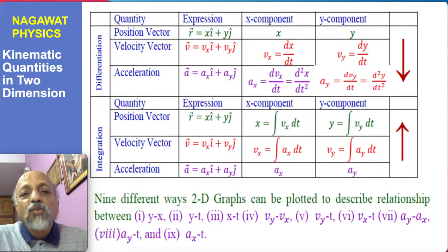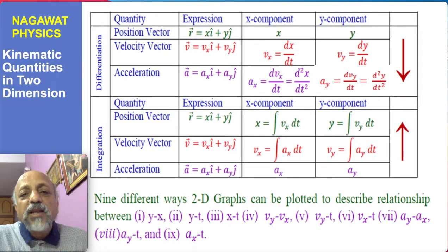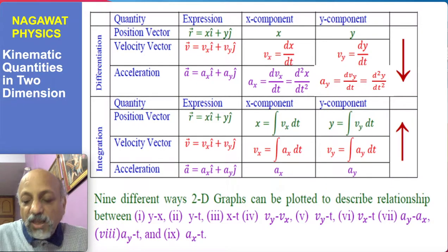You can plot several two-dimensional graphs using any two variables — for example, y versus x, x versus time, y versus time, vx versus time, vy versus time, vy versus vx, ax versus ay, ax versus time, or ay versus time. In this manner, we can graphically express the relationships between kinematic quantities in two dimensions.